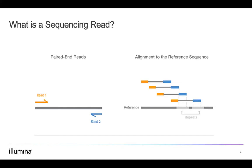Single-end sequencing involves sequencing DNA fragments from one direction. It is useful for some applications such as small RNA sequencing and can be a fast and economical option. With paired-end sequencing, once a DNA fragment is read from one direction, the process starts again in the opposite direction. In addition to producing twice the number of sequencing reads, this method enables more accurate read alignment and detection of structural rearrangements. Paired-end sequencing is typically used for targeted enrichment applications.